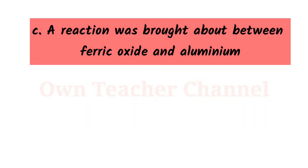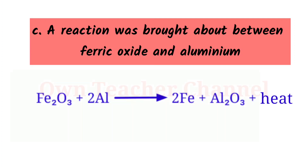A reaction was brought about between ferric oxide and aluminium. Aluminium is more reactive than iron, so aluminium metal replaces iron from ferric oxide to form aluminium oxide and iron.